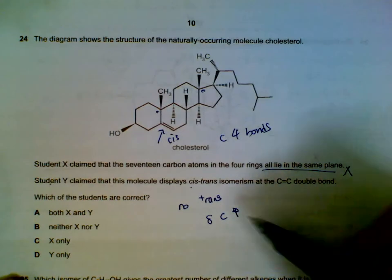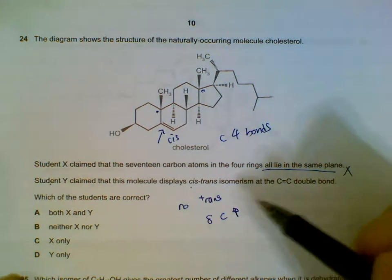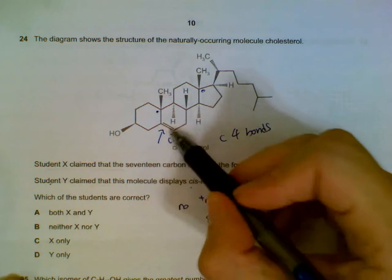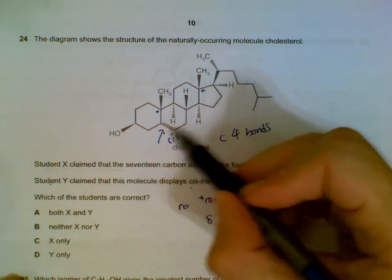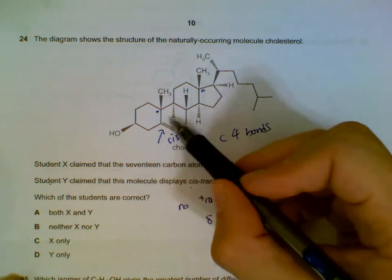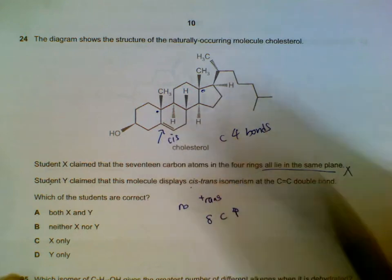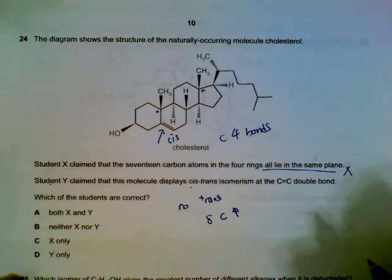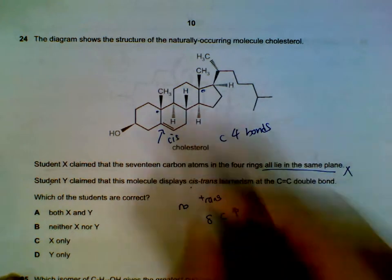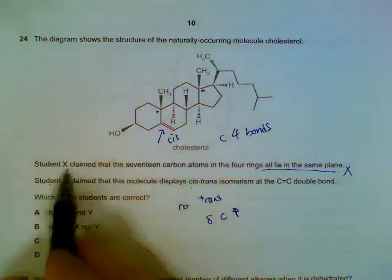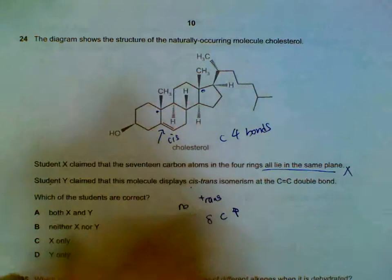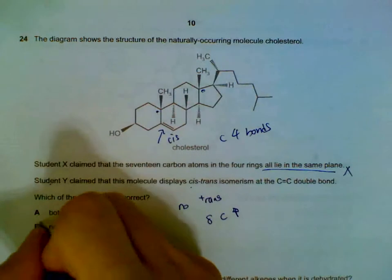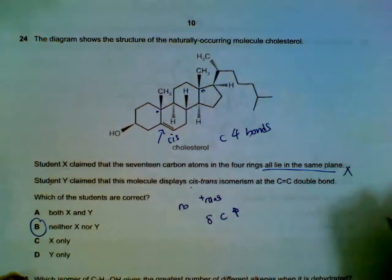More often than not, if you have a double bond within a ring, there will not be cis-trans isomerism. So both Student X and Student Y are wrong — neither of them are correct.